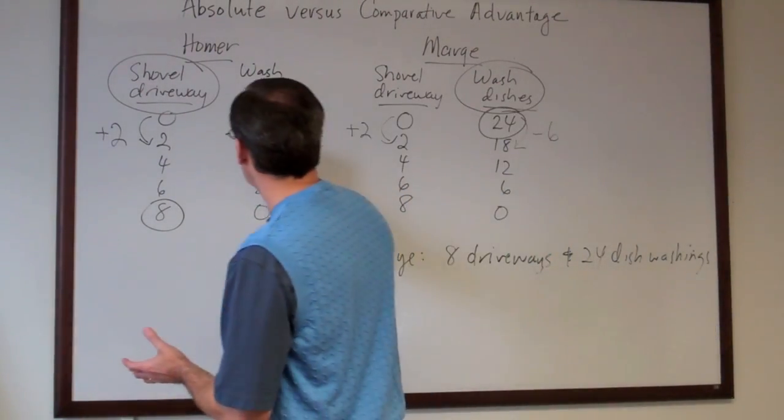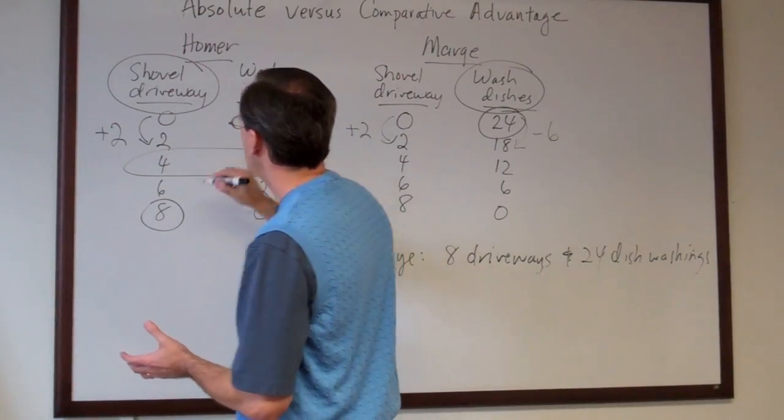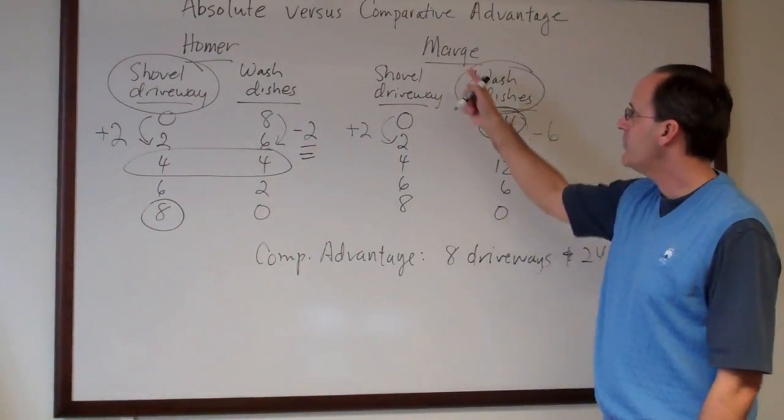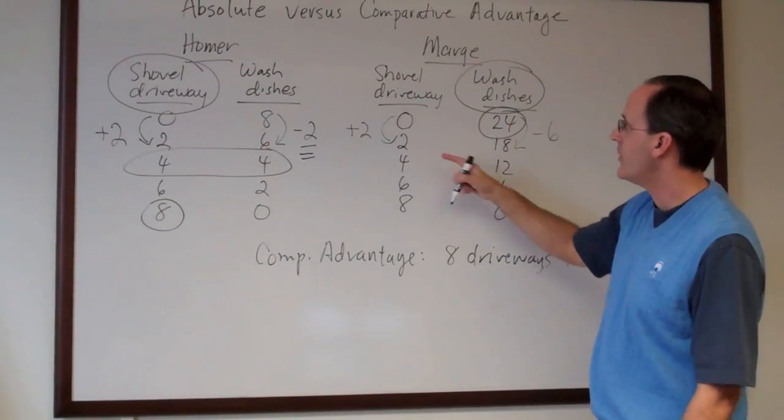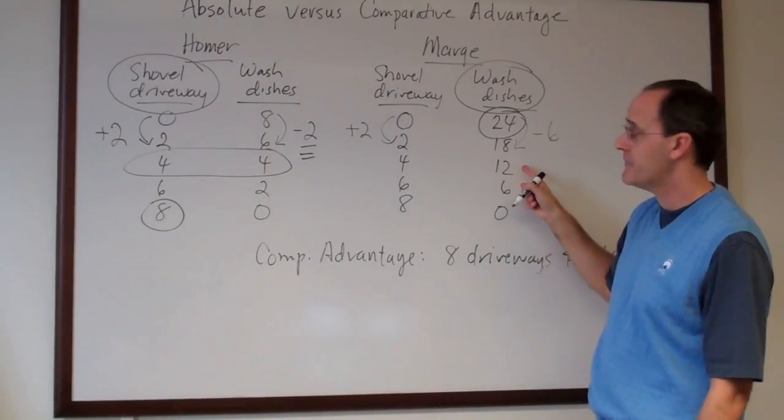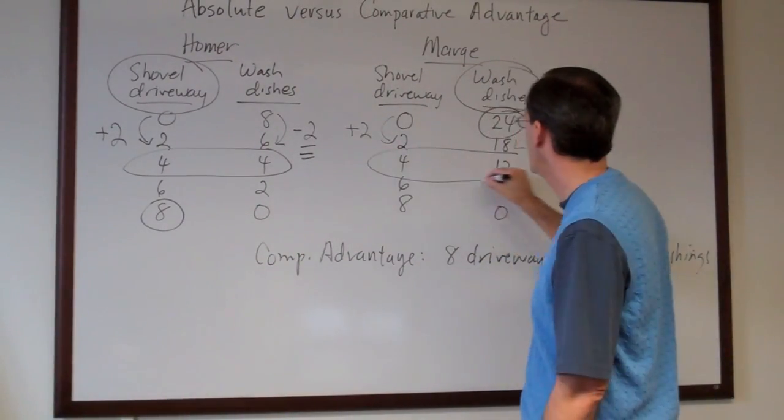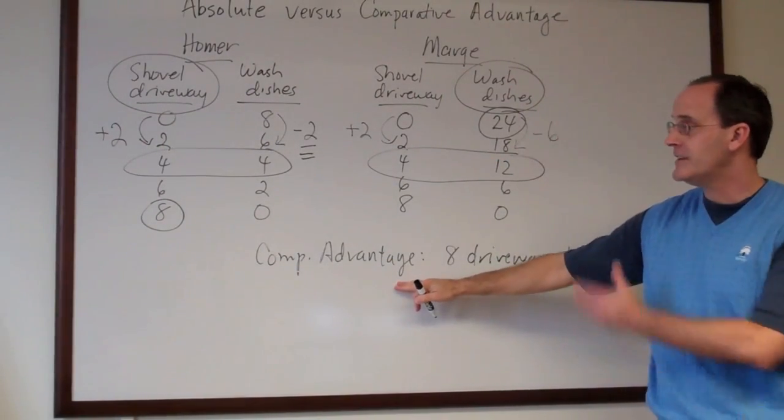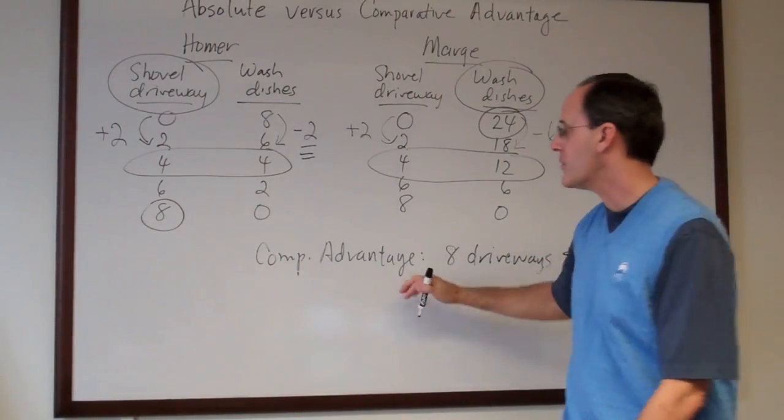So what we're going to do is we'll say Homer spends half his time on the driveway and half his time on the dishes. And Marge would then spend half her time on the driveway and half her time on the dishes. So this is without the advantage of comparative advantage. Let's see how they do just working on their own.